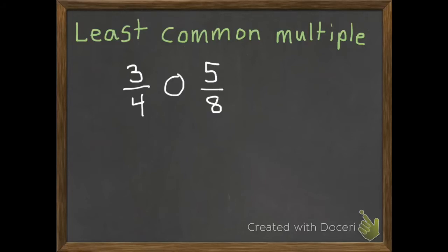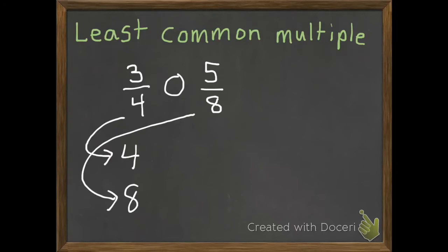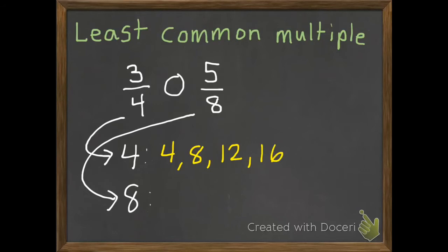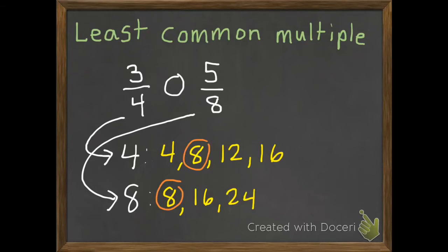So if we have these fractions of 3 fourths and 5 eighths, we can find the least common multiple. I take my two denominators, my 4 and my 8, and I'm going to find the multiples — which one they have in common that is the least. The multiples of 4 are 4, 8, 12, 16, and we could keep going. Since we're looking for the least, we probably only need to do a couple. My multiples of 8 are 8, 16, 24. And just after that first one, the least common multiple is 8.